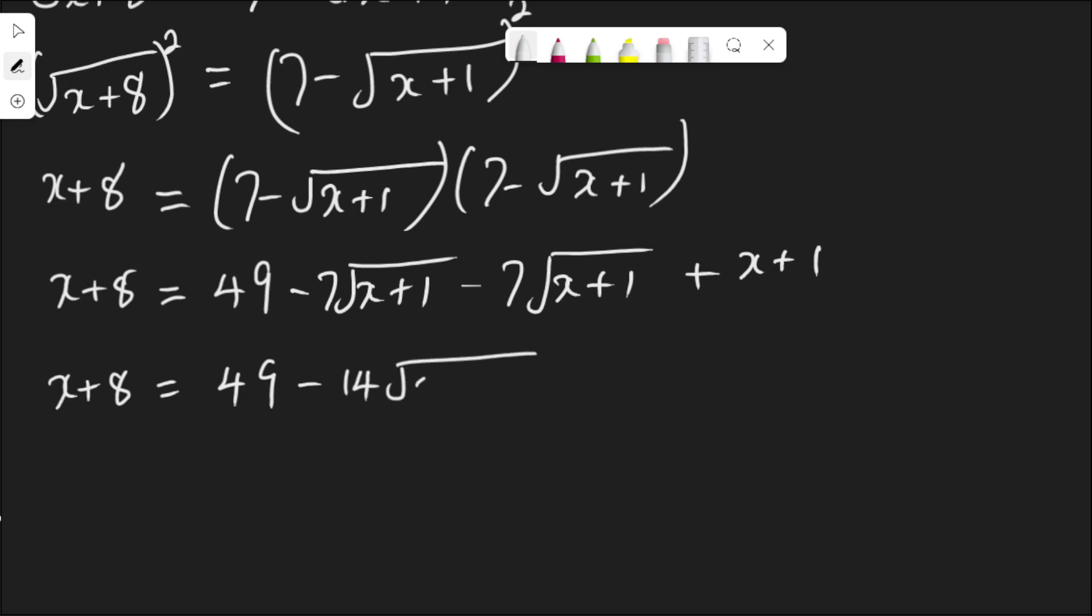So I have x plus 1, x plus 1 outside here. Collecting like terms, this one and this, I have x plus 8 equals to 49 plus 1 is 50 minus 14 root x plus 1 plus this x.